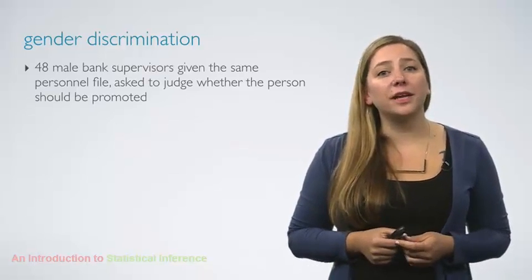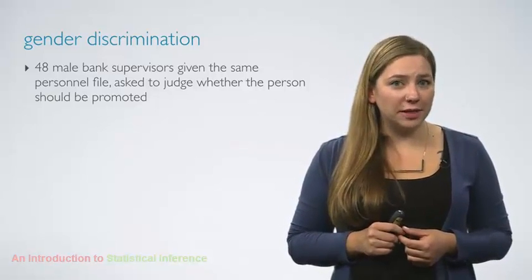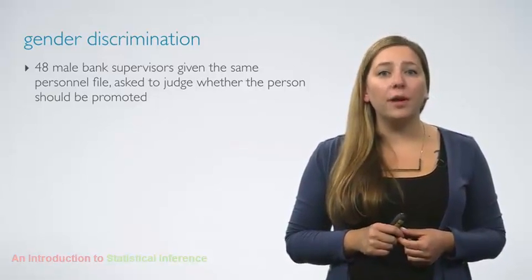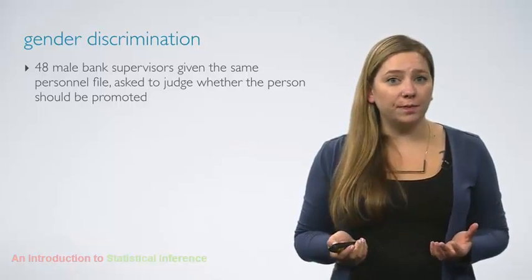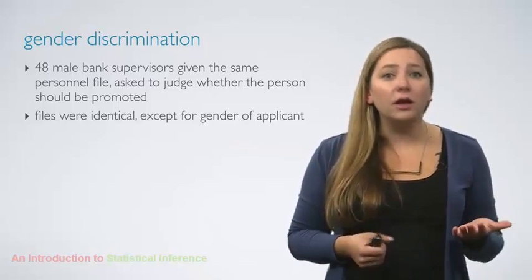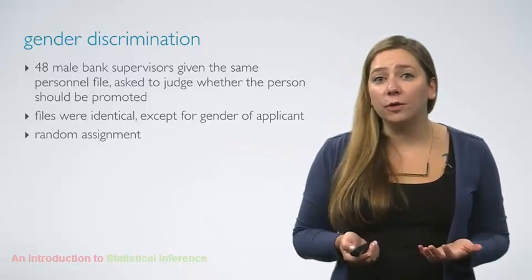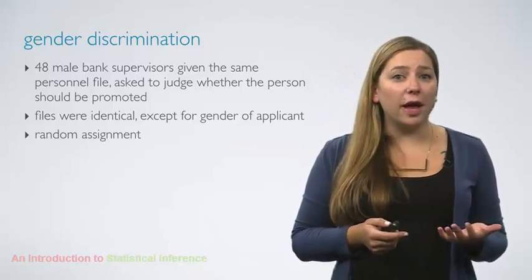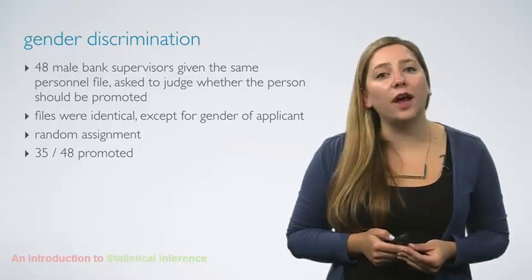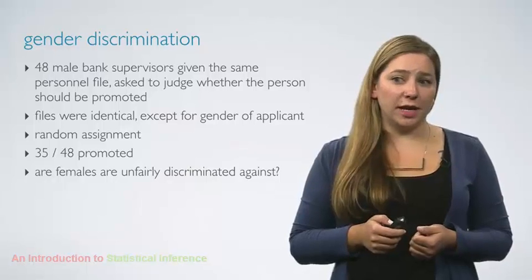In 1972, as part of a study on gender discrimination, 48 male bank supervisors were each given the same personnel file and asked to judge whether the person should be promoted to a branch manager job that was described as routine. The files were identical, except that half of the supervisors had files showing the person was male, while the other half had files showing the person was female. It was randomly determined which supervisors got male applications and which got female applications. Of the 48 files reviewed, 35 were promoted. The study is testing whether females are unfairly discriminated against.